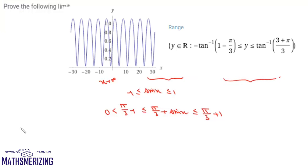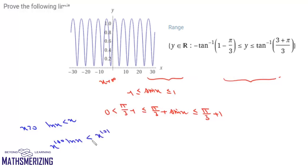We know that when x is greater than 0, log x is less than x. Multiplying by x to the power 100, we get x to the power 100 times log x is less than x to the power 101. Dividing by e to the power x, we can write x to the power 100 times log x upon e to the power x is less than x to the power 101 upon e to the power x.